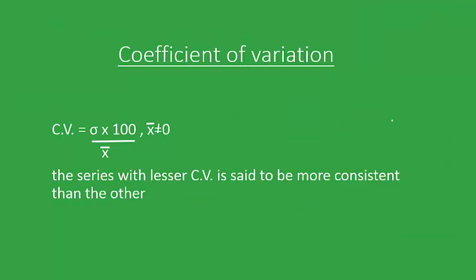Last and the simplest concept in this particular series is the coefficient of variation. We could have two particular data with the same mean but different standard deviation or likewise. To compare these data, we need another term called the coefficient of variation, given by sigma upon x bar into 100. The series with lesser C.V. is said to be more consistent than the other. That is, the values are more closer to the point about which the mean or standard deviation is calculated.